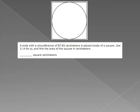A circle with a circumference of 87.92 cm is placed inside of a square. Use 3.14 for pi and find the area of the square in centimeters. The first thing we need to look at is, if we're trying to find the area of a square, we need to use the formula for the area of a square. Just like a rectangle, it's length times width.